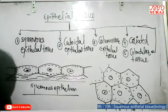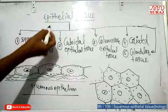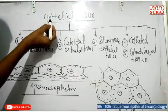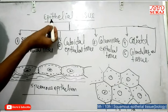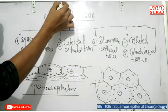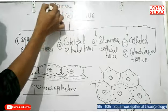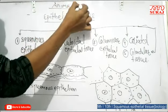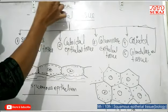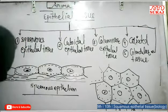Hello students, today we are going to discuss epithelial tissue. It is a type of animal tissue. In animals, the tissue which acts as the protective tissue is epithelial tissue.